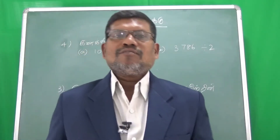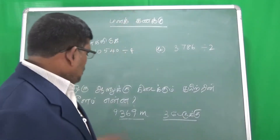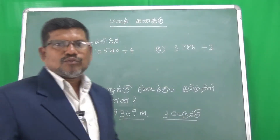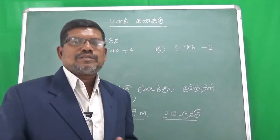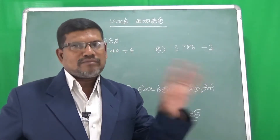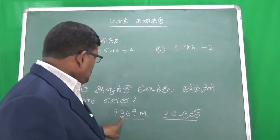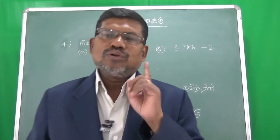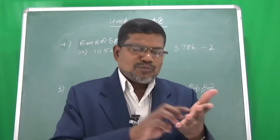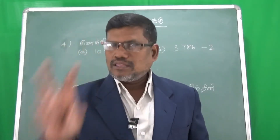If you want to find the three types, you can see each other. If you have 300, you can get 300. 300 plus 100 is 300.